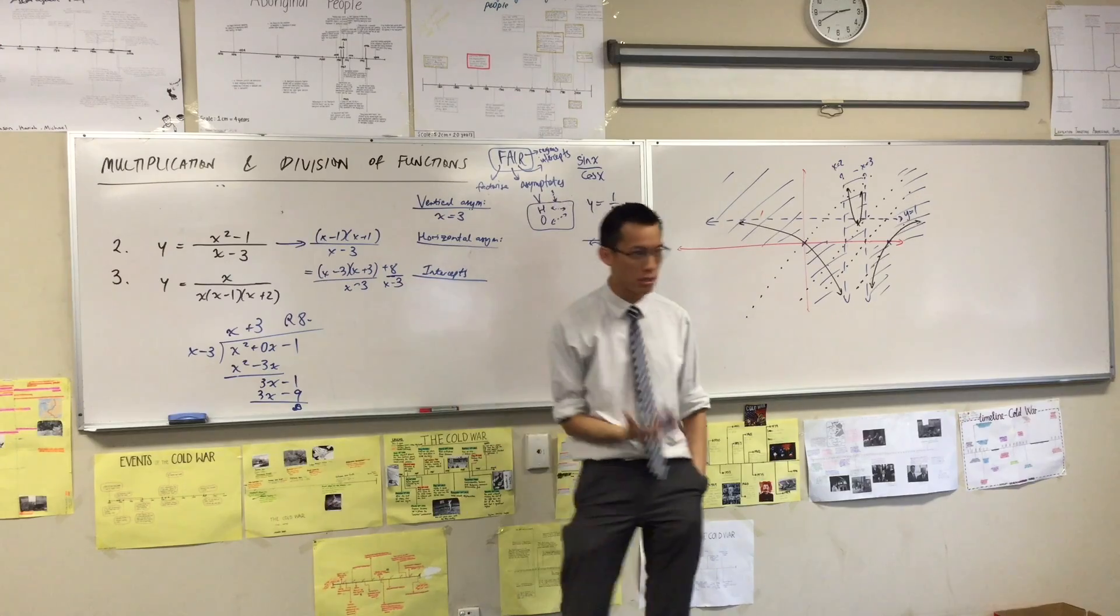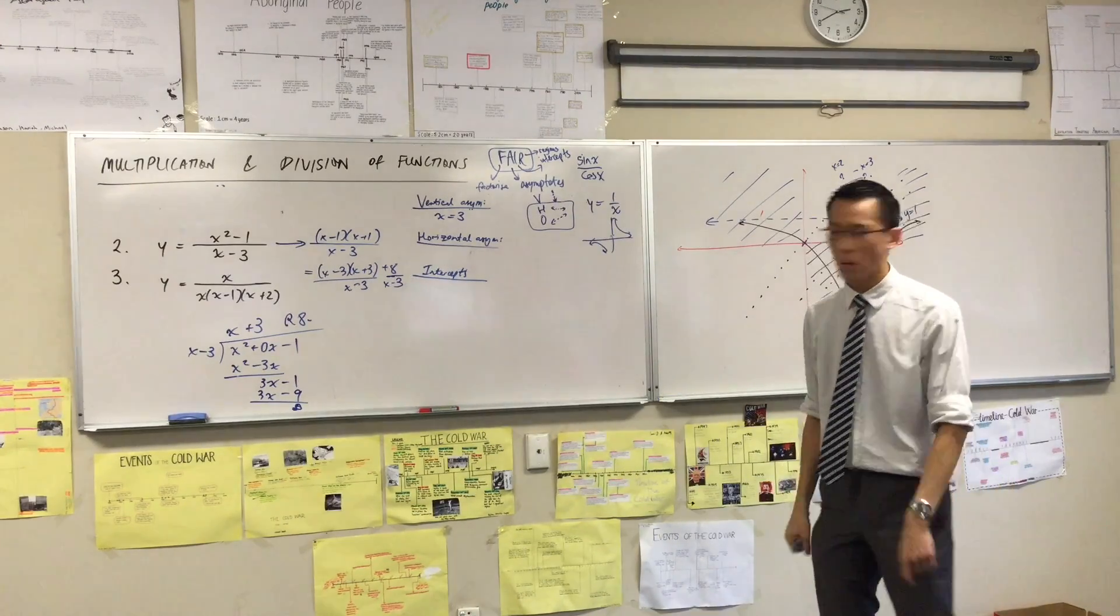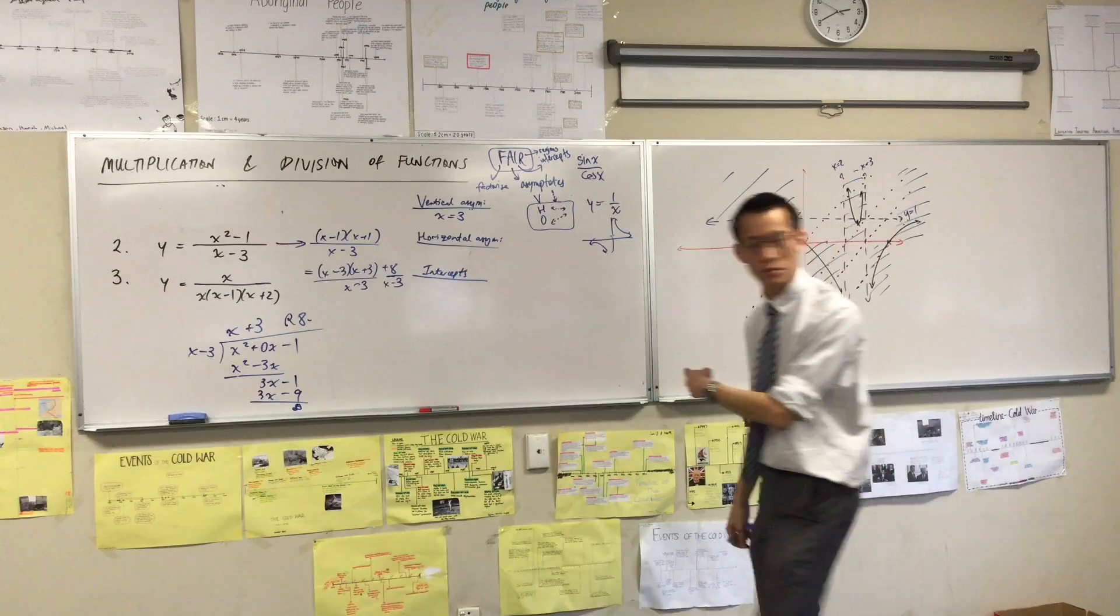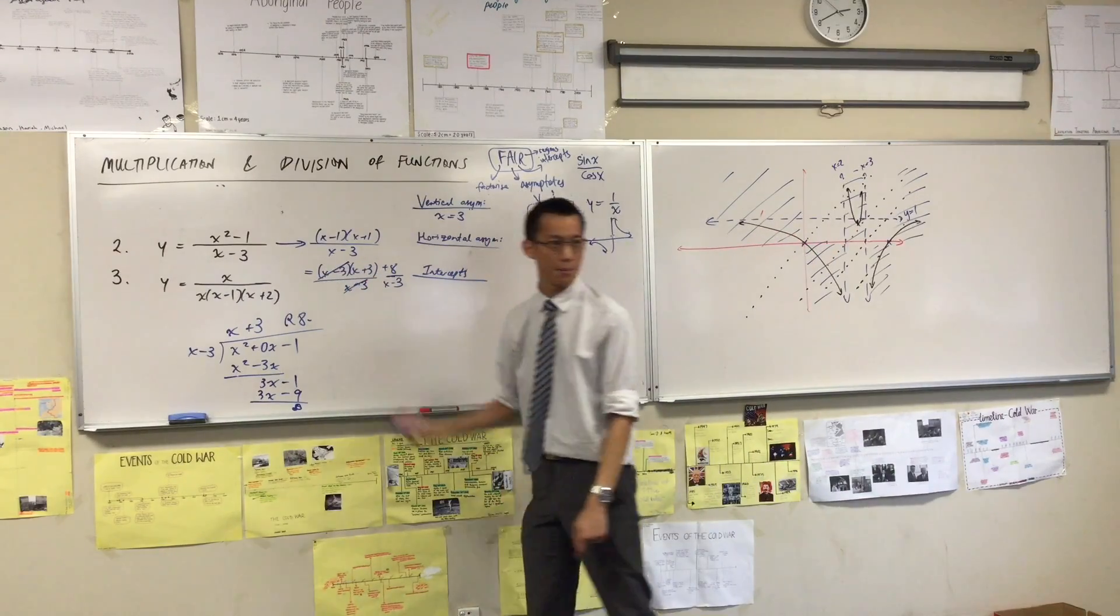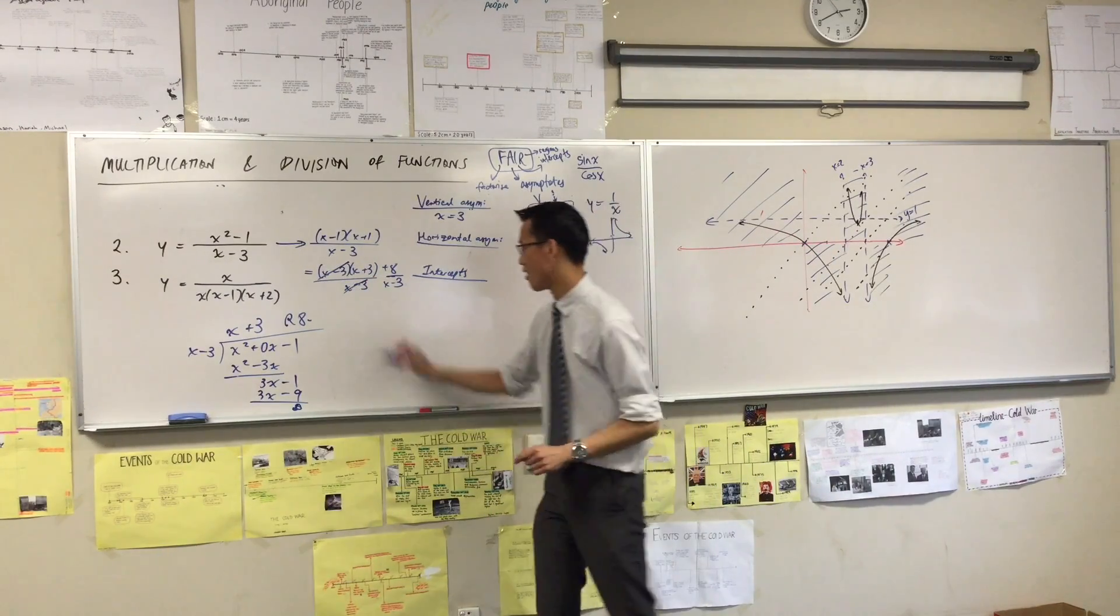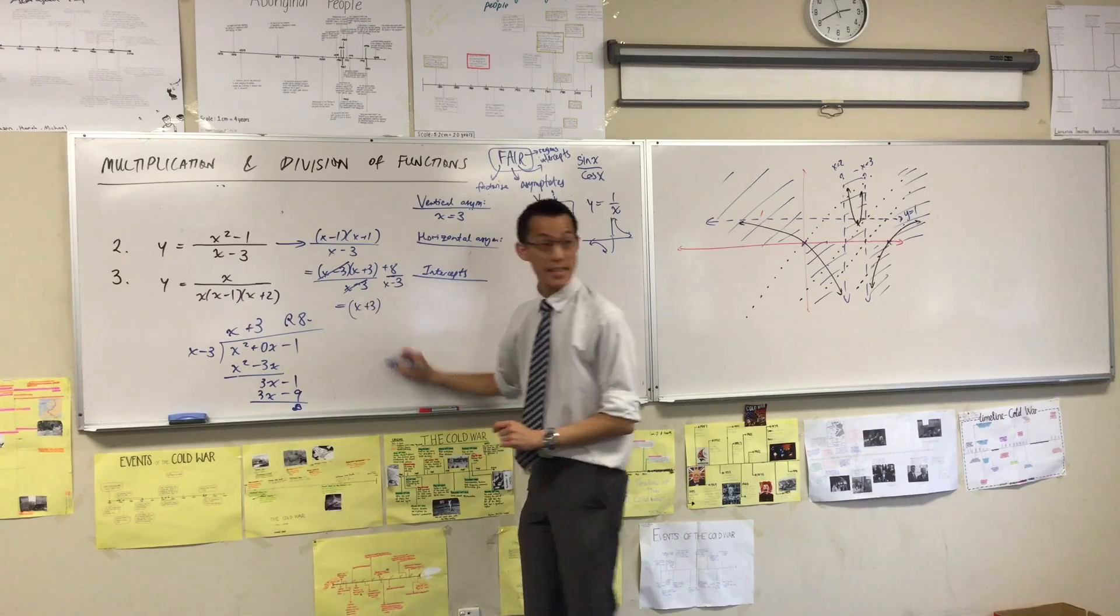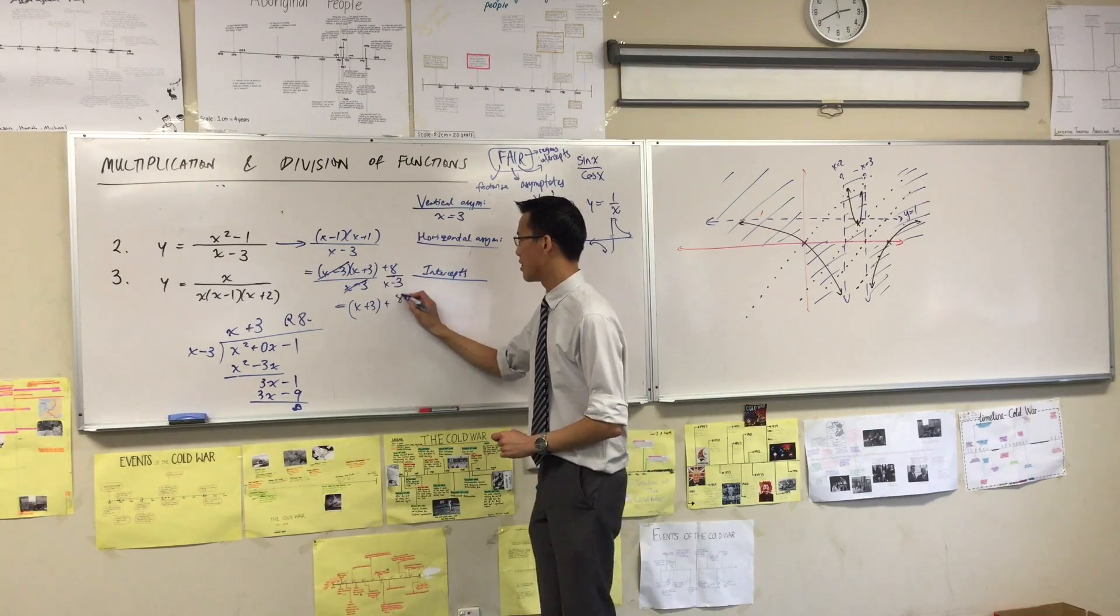So I'm going to write them as two separate fractions. Do you agree I can do that? You break numerators apart. So what happens to the left-hand fraction? They cancel. Now you get this thing and then you get this thing.